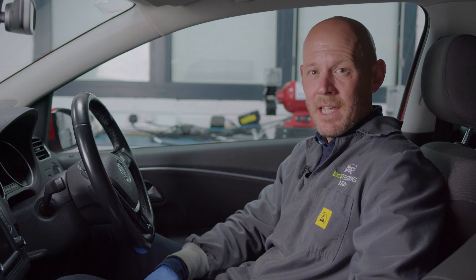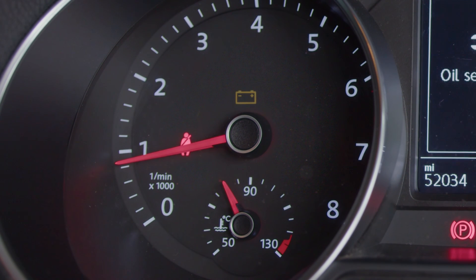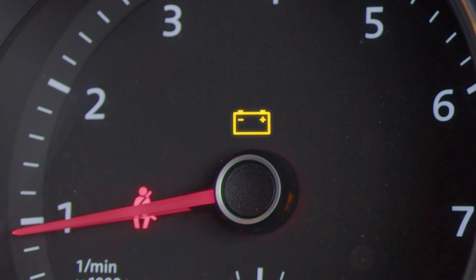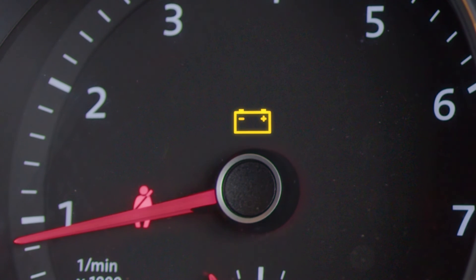In non-ECU controlled systems you can determine what kind of fault you have depending on how this light appears with a dimly lit or intermittent light indicating an internal fault with the alternator and a bright light indicating a no charge situation.